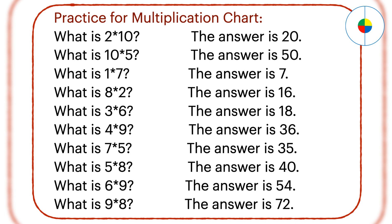What is 5 times 8? 5 times 8 is the same as 8 times 5. Since 8 is an even number, the 1's position is 0, and the 10's position is 4. The answer is 40.